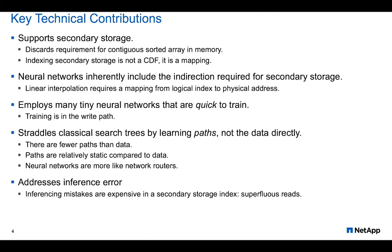First, there are fewer paths than there are data, which means smaller training sets and therefore faster and more accurate training. Second, paths are relatively static — think of a B+ tree, where while data come and go the actual structure is pretty much static in a production system. Finally, when indexing secondary storage it's important that inferencing error is addressed up front because making a mistake is expensive — it leads to superfluous reads and that has a deleterious effect on performance.